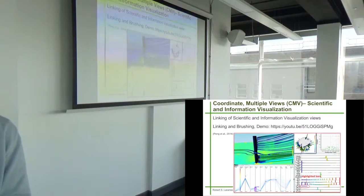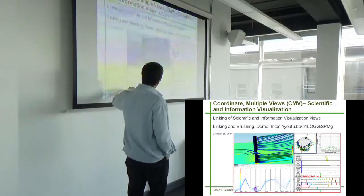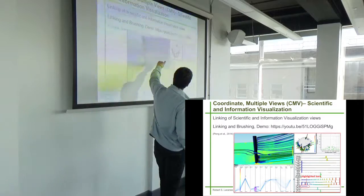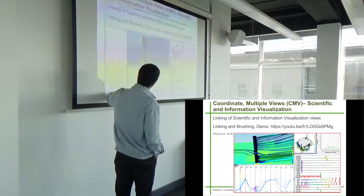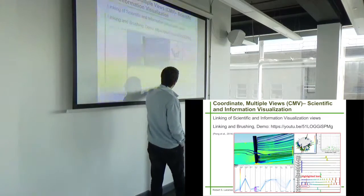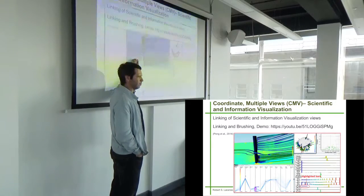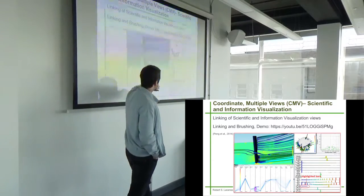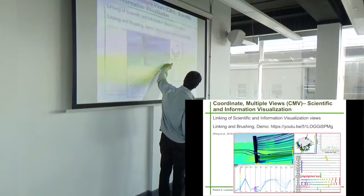Okay, and then one more example we're going to look at is called coordinated multiple views. In this example there are multiple windows all connected together, so we see a parallel orbit plot here, this is a spatial view of some data, this is a histogram for every variant of the data, a standard histogram.